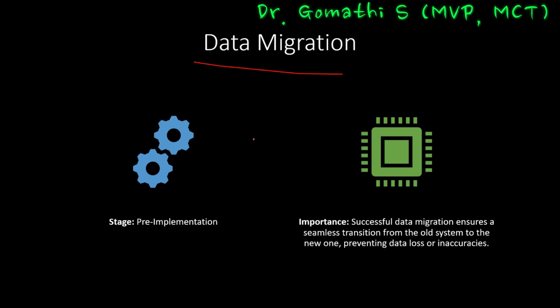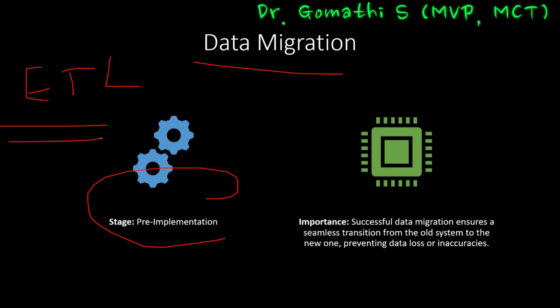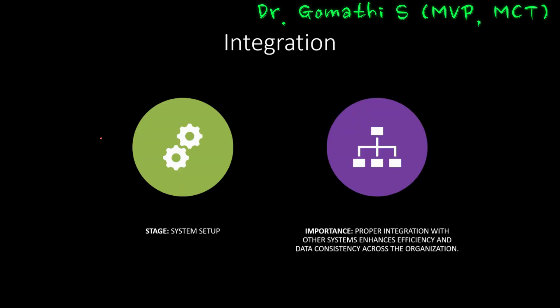The next stage is data migration, another pre-implementation stage. Data is the lifeblood of any organization; successful data migration ensures that historical information is seamlessly transferred to the new system, preventing data loss or inaccuracies. We meticulously ensure that valuable data from the legacy system finds a new home in Microsoft Dynamics 365 Business Central. Data migration involves extracting, transforming, and loading data while maintaining its integrity, guaranteeing that crucial information is readily available and facilitating informed decision making.